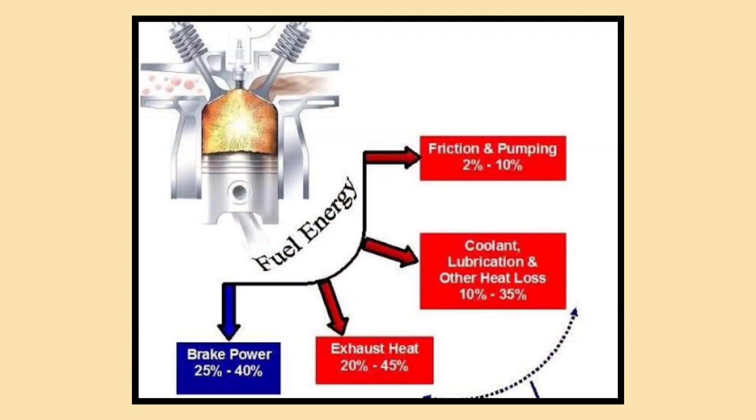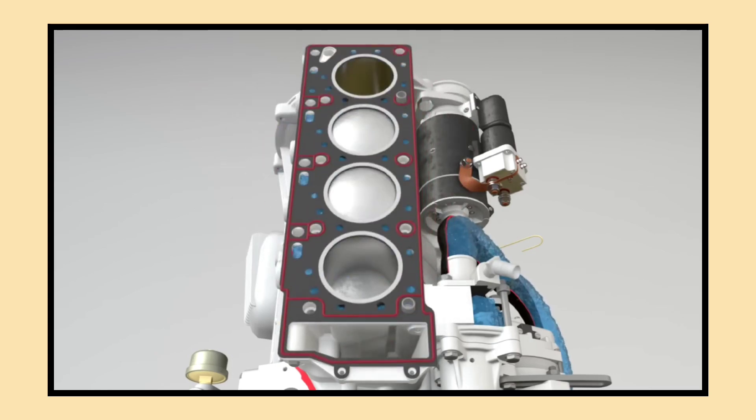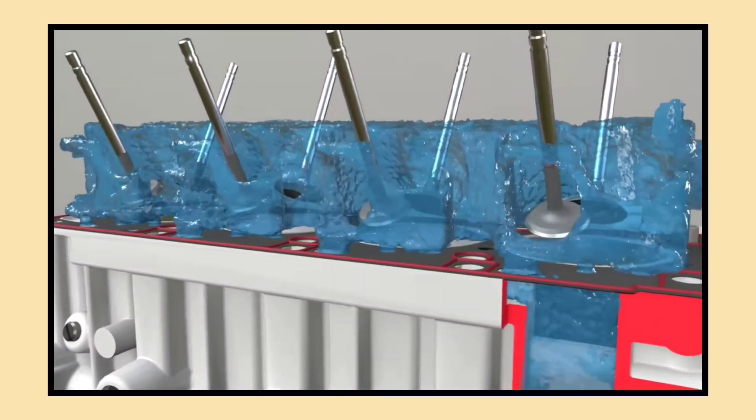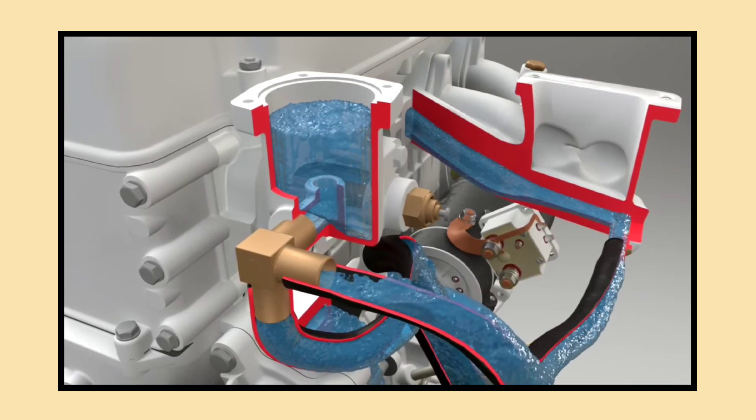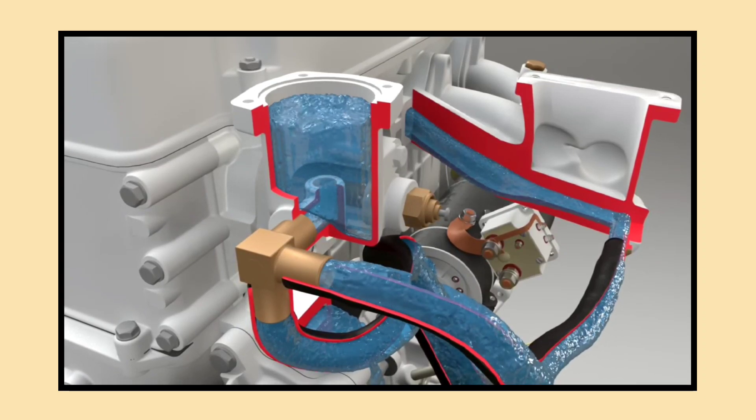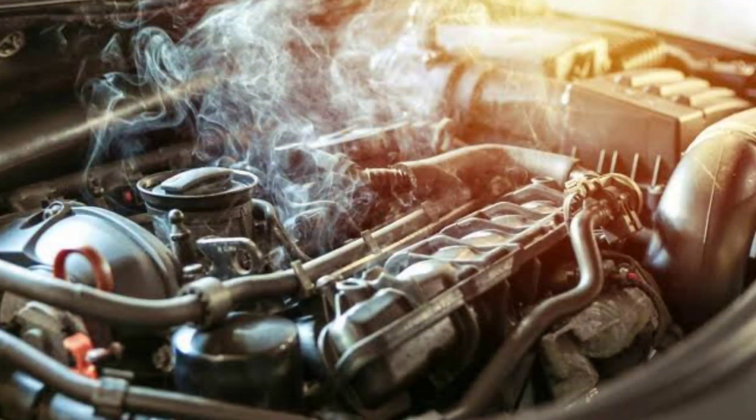As the engine runs, it generates significant heat due to fuel combustion and friction. The coolant circulates through the engine block and cylinder heads, absorbing this heat and reaching temperatures of around 200°F or more. It's crucial for the coolant to efficiently absorb heat to prevent engine damage. Without this process, the engine could overheat, leading to serious issues.